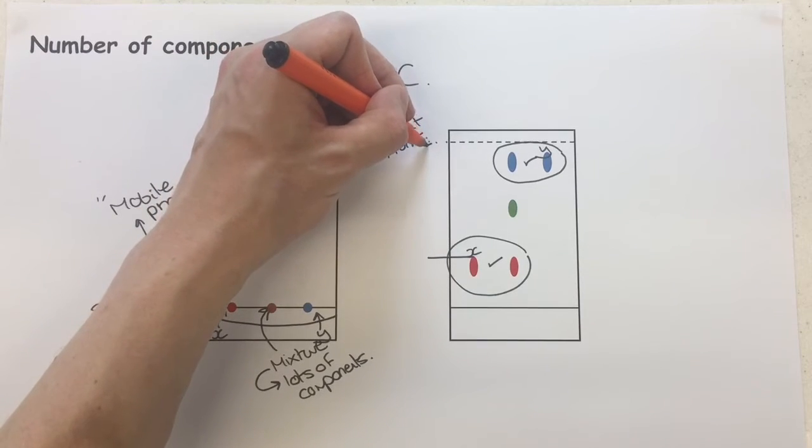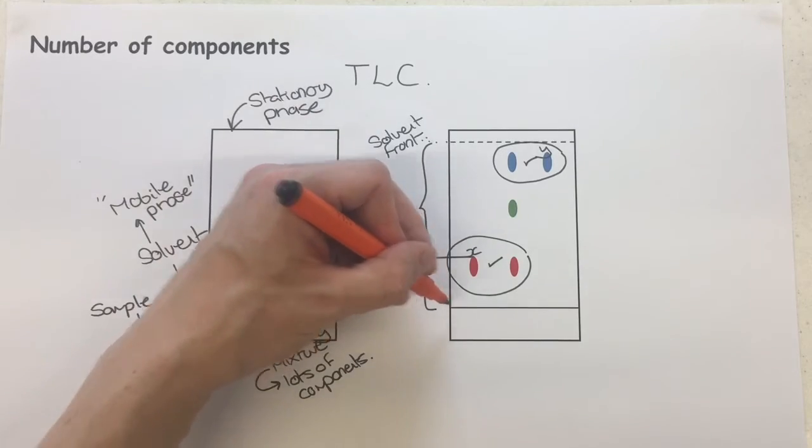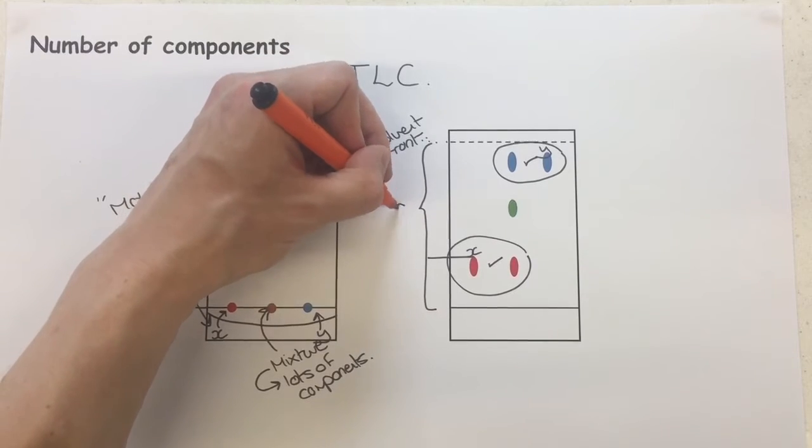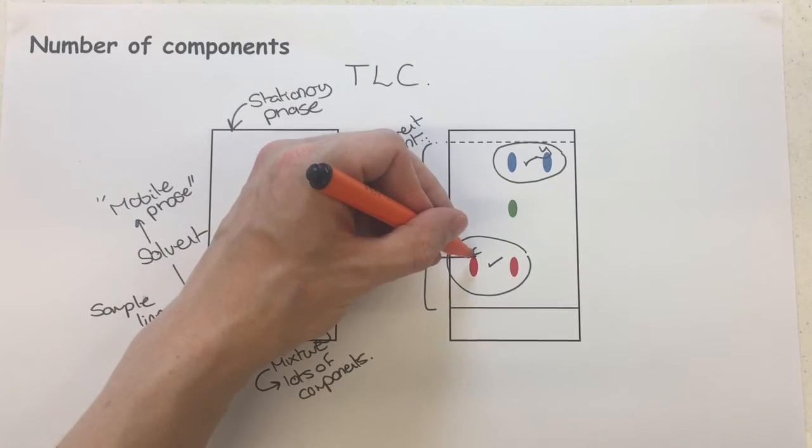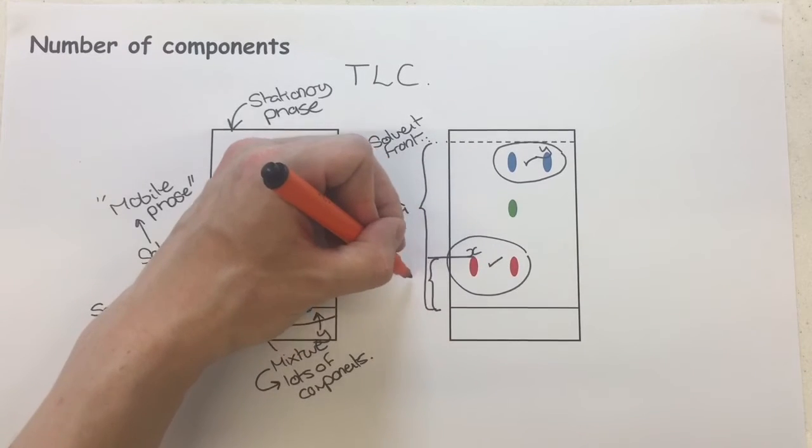You would need to consider how far the solvent front is, which is the distance between the sample line and where it gets up to, the solvent front. So let's call that value A. And how far the spot travels, so that would be B.